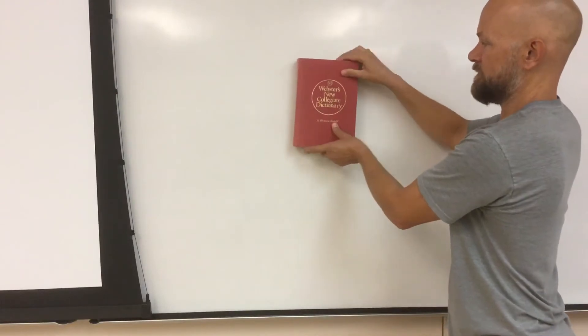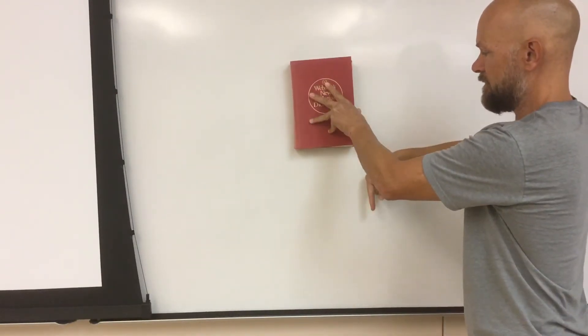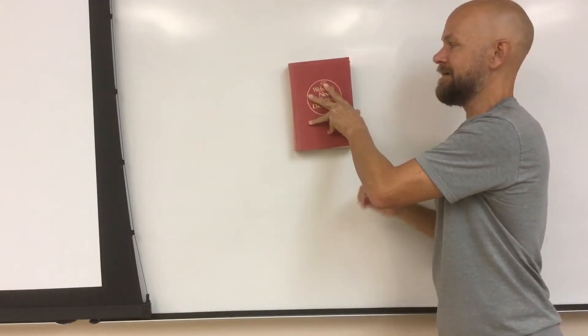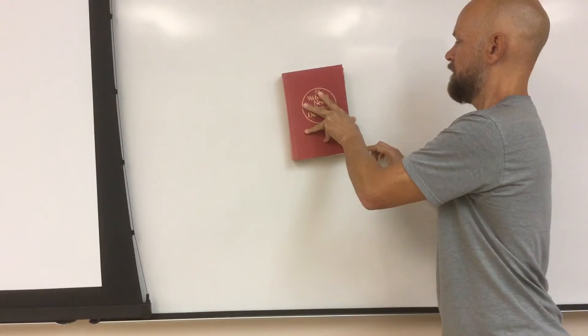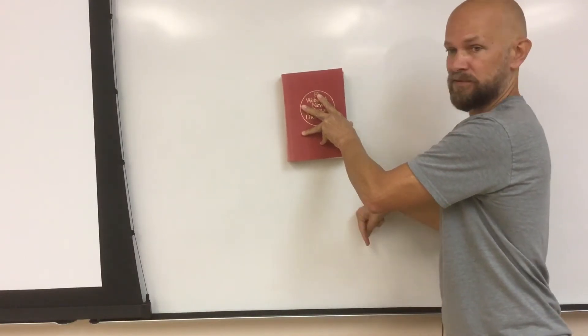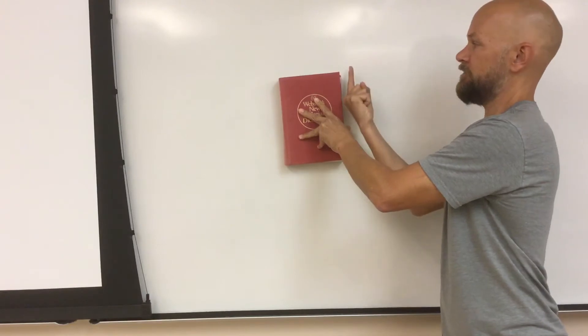So let's consider all the forces like a free body diagram. There's gravity this way, and we're talking about the forces acting on the book, not the forces acting on the wall. So on the book, gravity pulls down, the wall pushes out, and friction points up.